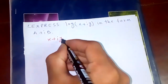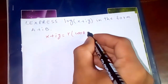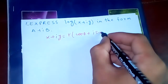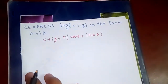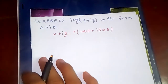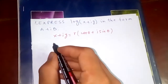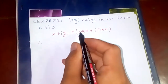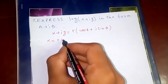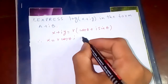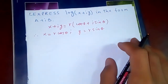First, we are going to consider: let x + iy equal r cosθ + i sinθ. This is the very famous polar form. From this, we are going to find r and θ. Separating the real and imaginary parts gives us x = r cosθ and y = r sinθ.